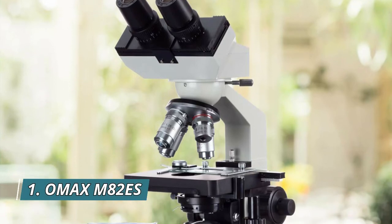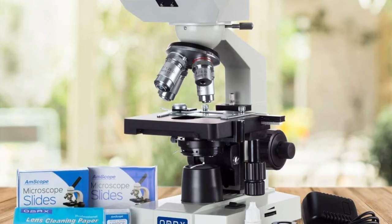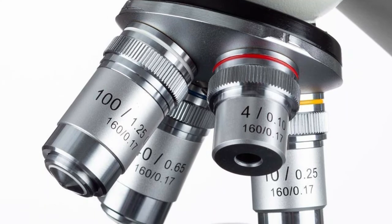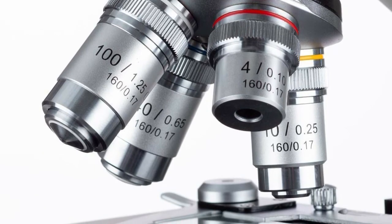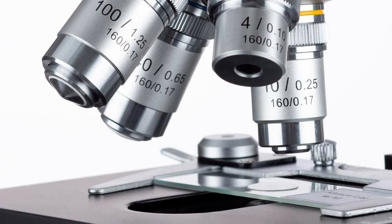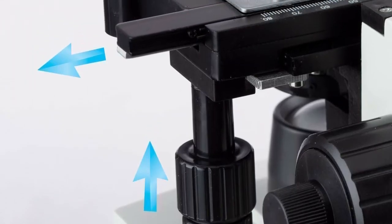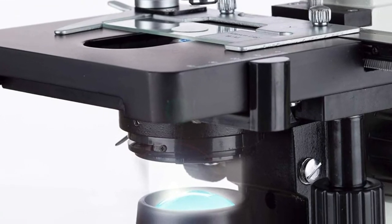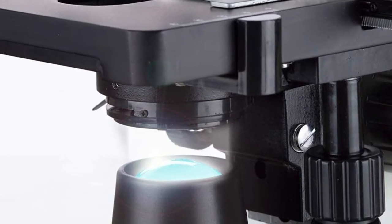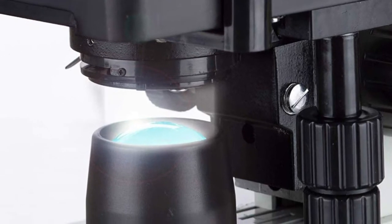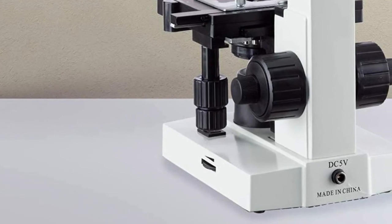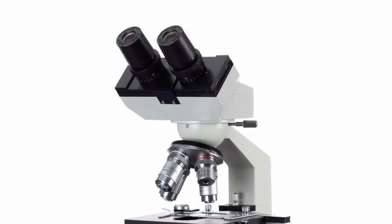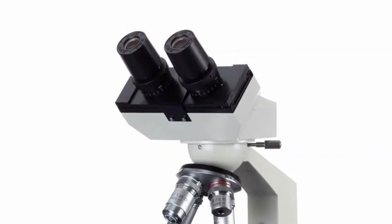Number 1 OMAX M82ES, 40x to 2000x magnification eyepieces, wide field WF10X and WF20X. Objectives achromatic DIN 4x, 10x, 40x S, 100x S oil. Viewing head 45 degrees inclined, 360 degrees swiveling binocular. NA 1.25 Abbe condenser with iris diaphragm. Illumination transmitted lower LED light intensity adjustable. Focus coaxial coarse and fine knobs on both sides. Full solid metal frame construction with stain-resistant enamel finish. Power supply AC/DC adapter, UL approved. Input 100-240V. 100-piece blank glass slides with 100-piece cover slips and 50-sheet lens cleaning paper included.